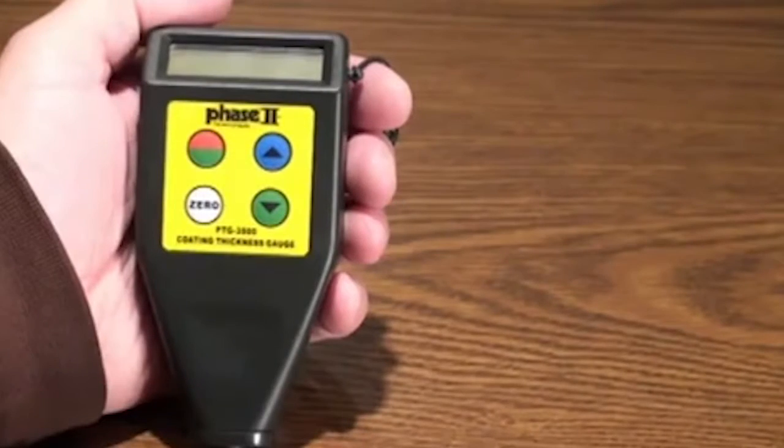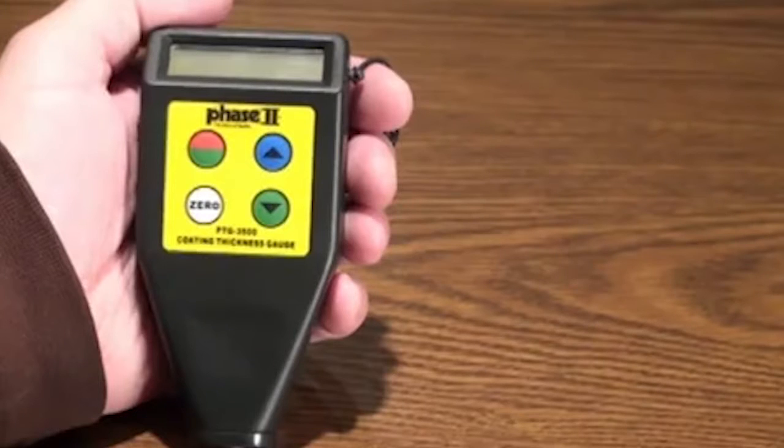This is an instructional video detailing the functions and applications of the Phase II PTG-3500 series coating thickness gauges. These coating thickness gauges are designed to test non-magnetic coatings on both ferrous and non-ferrous metals.